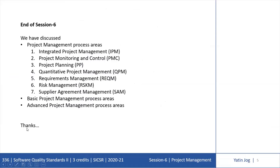This is the end of session number 6, where we have discussed the project management process areas, including the process areas related to IPM, PMC, PP, QPM, REQM, RSKM, and SAM. We have discussed the basic project management process areas and their interactions, as well as the advanced project management process areas and their interactions.